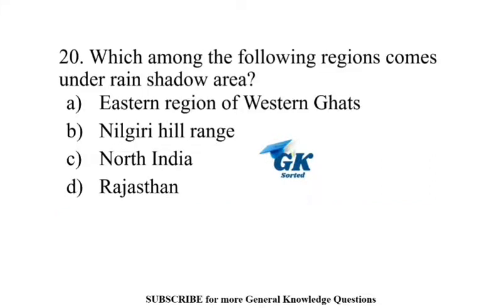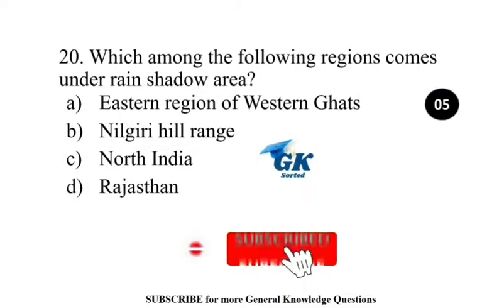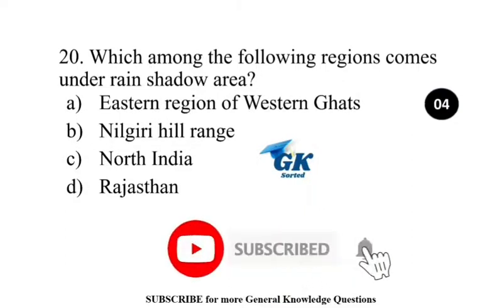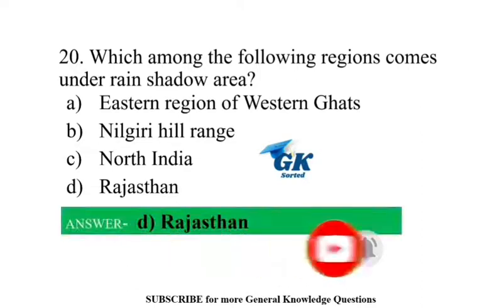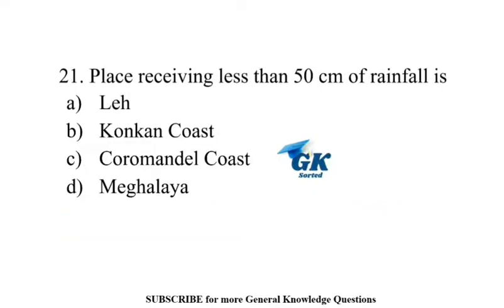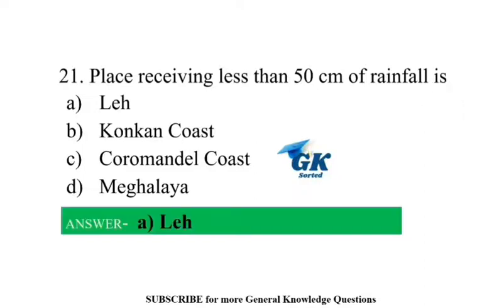Which among the following regions comes under the rain shadow area? Rajasthan. Places receiving less than 50 cm of rainfall — Leh.